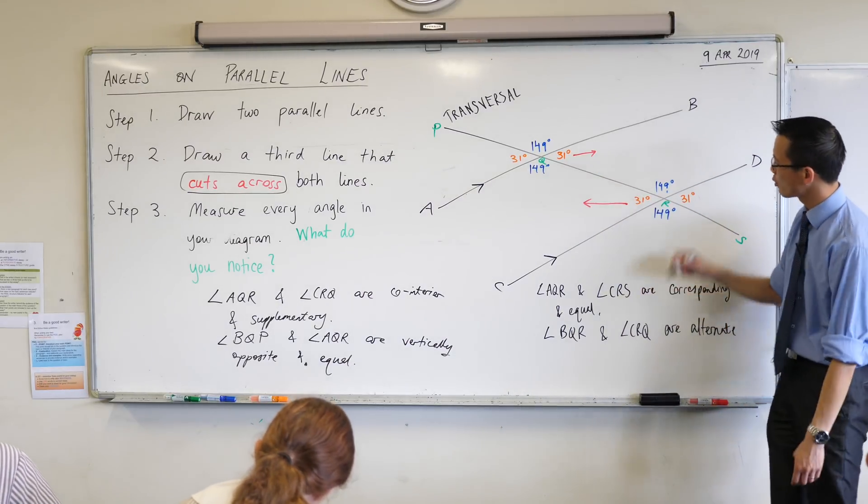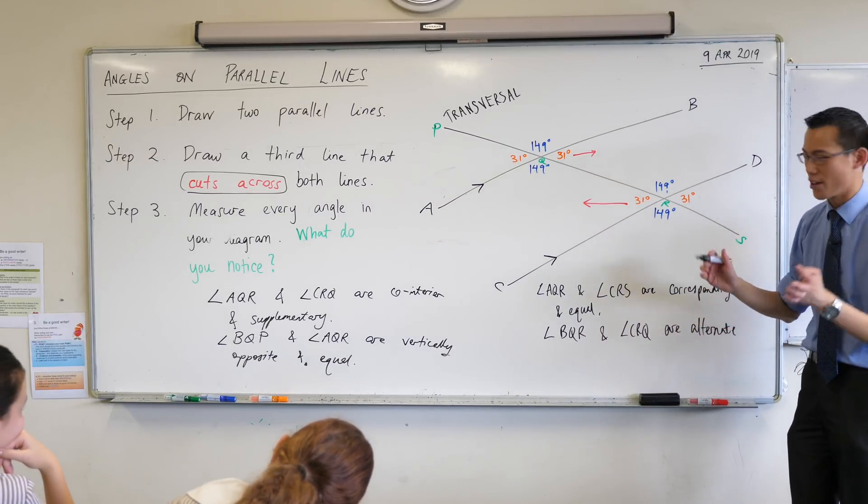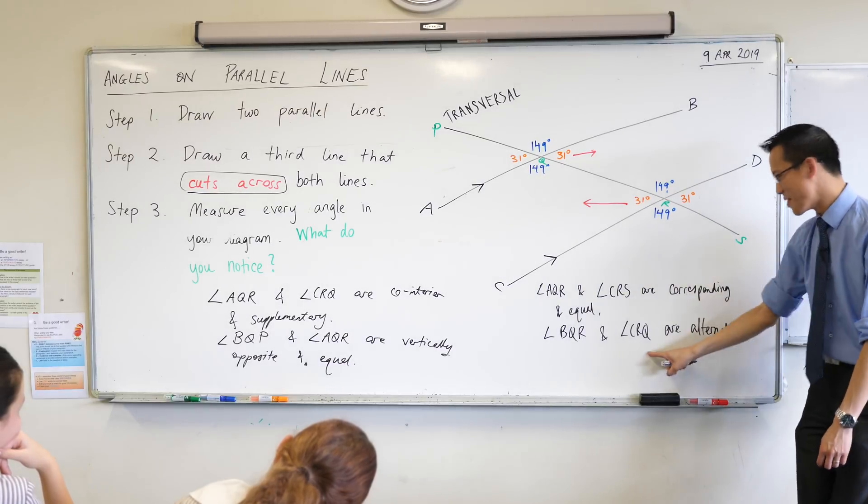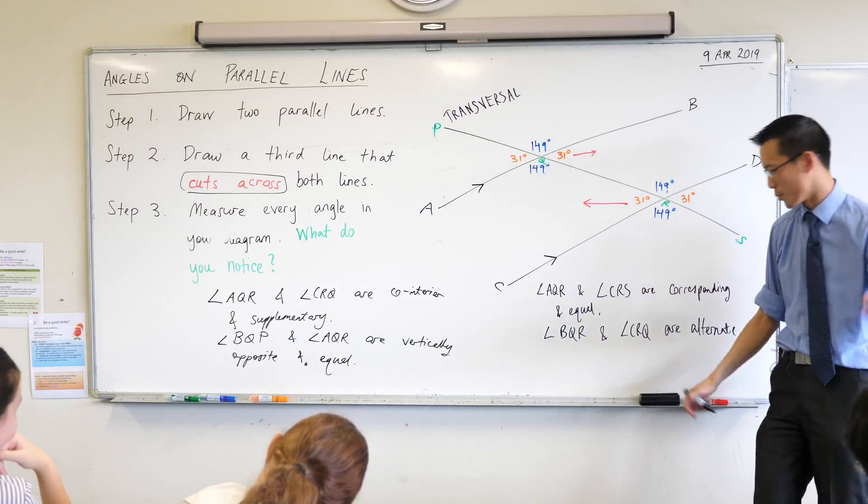Or it could look like an N that's like turned sideways. Any of those are fine. I try not to say those because the Z is backwards. And I'm like, that's not what my Z looks like. So they're alternate. And what's the relationship between the sizes of the angles? They're equal, very good.